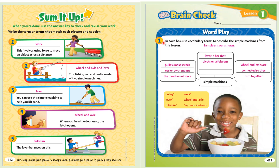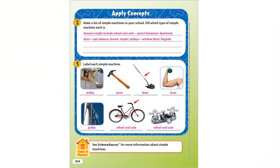Lesson 1 Brain Check — Wordplay. In each box, use vocabulary terms to describe the simple machines from this lesson: Simple Machines, Pulley, Work, Lever, Wheel and Axle, Fulcrum. Apply concepts: make a list of simple machines in your school and tell which type of simple machine each is. Label each simple machine. Take it home: see ScienceSaurus for more information about simple machines.